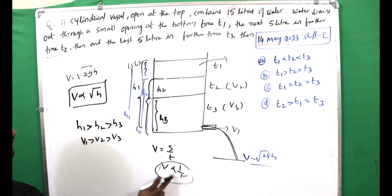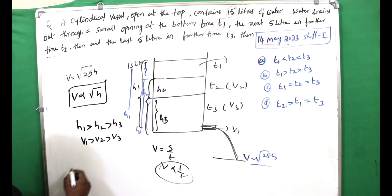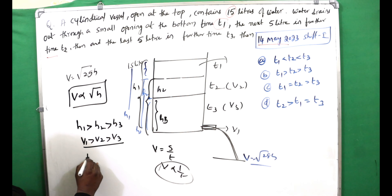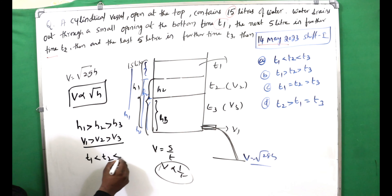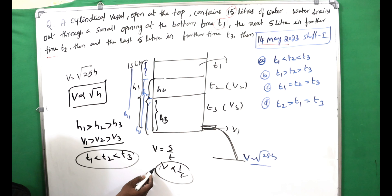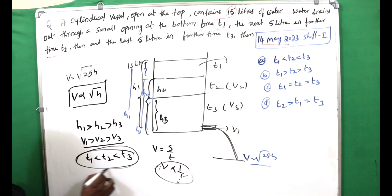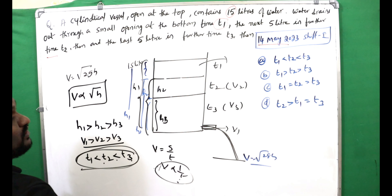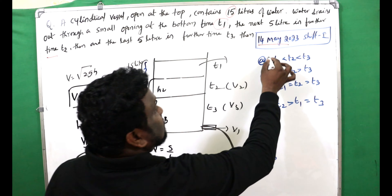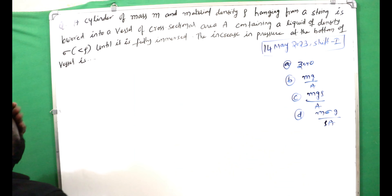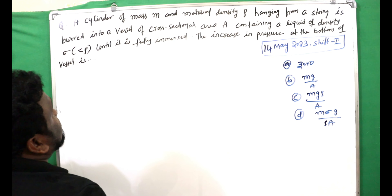Since velocity v = s/t, velocity is proportional to 1/t. Because v1 > v2 > v3, it follows that t1 < t2 < t3. Option A is the correct answer.